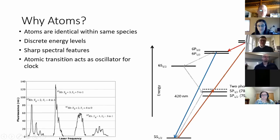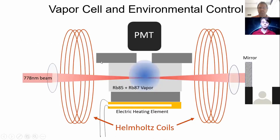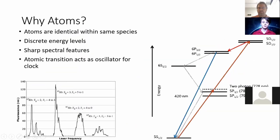So on the left, we basically have a schematic of the spectrum of rubidium around the two-photon 5s to 5d transition. And then we have an energy level diagram on the right-hand side.